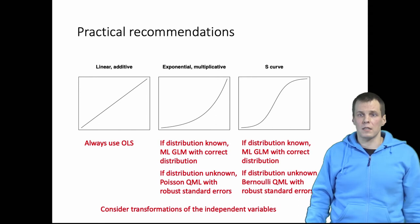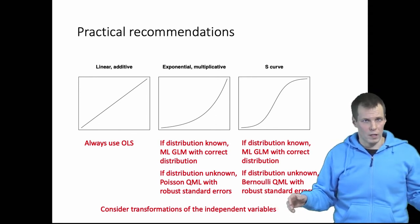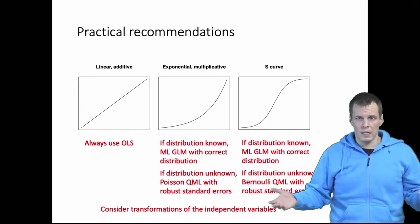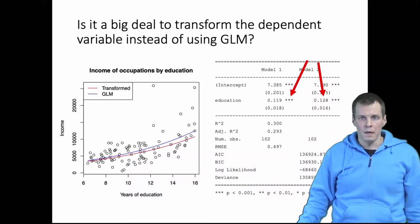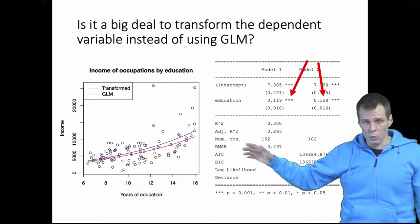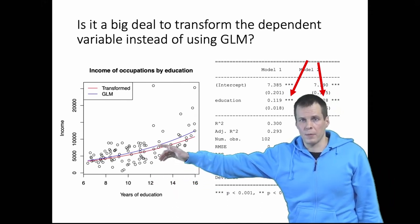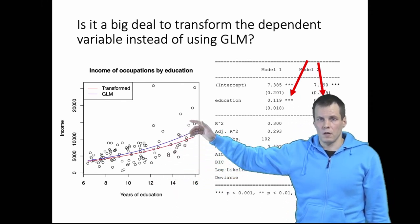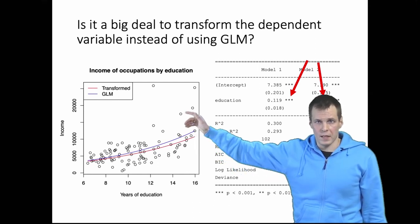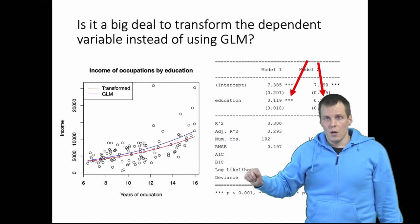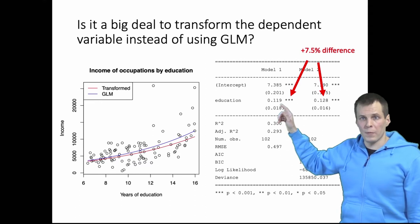The final question is that is this GLM and transforming the fitted value versus transforming the dependent value, is it a big thing? So let's do an empirical example. We have here two models, we are using the prestige data, we have years of education here, we have the predictions from these two models transform dependent variable and GLM effects on income. When we look at the regression coefficients we can see that there's a 7.5 percent difference.